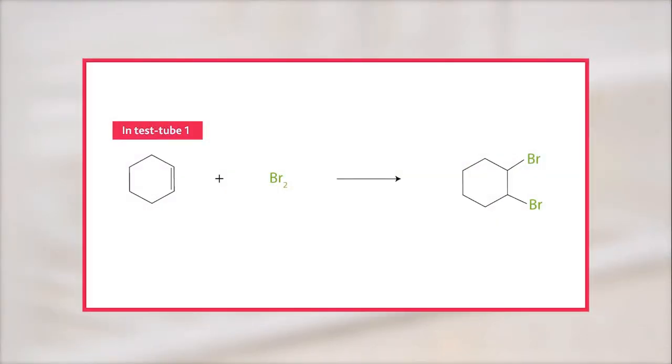The colourless addition product, 1,2-dibromo cyclohexane, is formed.